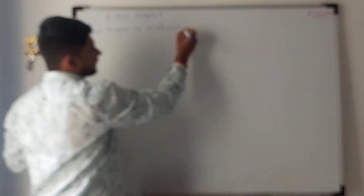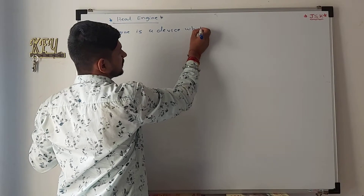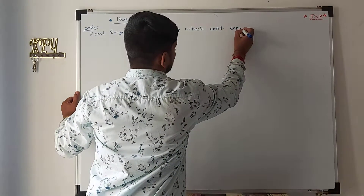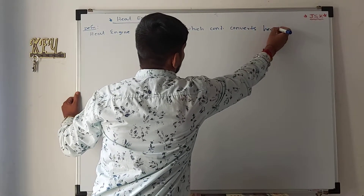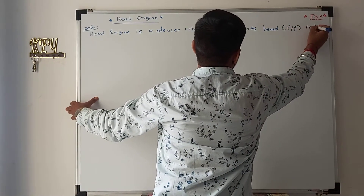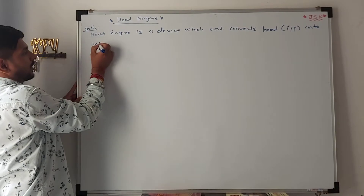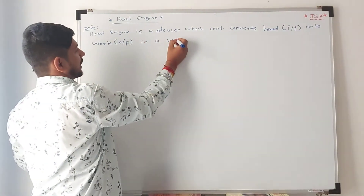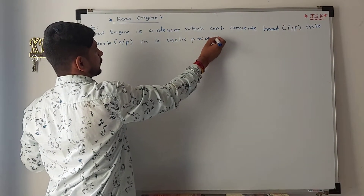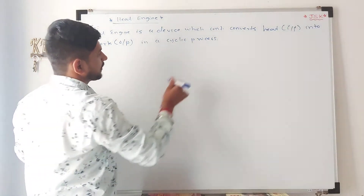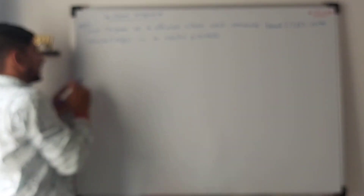A heat engine is a device which continuously converts heat — that is the input — into work, where work will be the output, in a cyclic process. So here we can say the process will be cyclic.